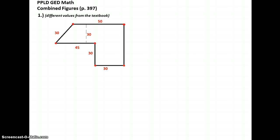All right, this video is going to be about problem number one on page 397 from the homework in your GED math class, except that I'm going to be using different values than the ones in the book. But I will give you a strategy on how you can break this combined figure down and figure out what its total area is. First, we have to figure out some shapes that we can break it into for which we have formulas.